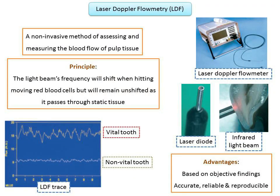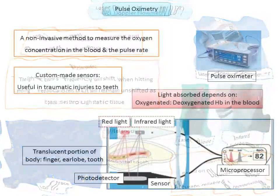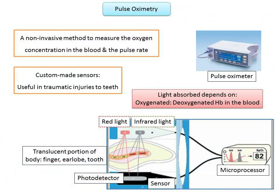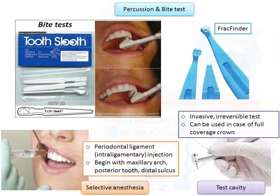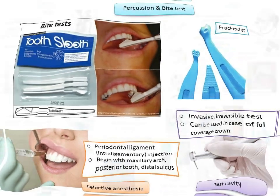These were the various methods of pulp vitality tests. There is no single test which can be considered the gold standard for detecting pulp vitality, and a combination of two to three tests should be performed in order to determine the condition of the pulp and accordingly plan a treatment strategy.